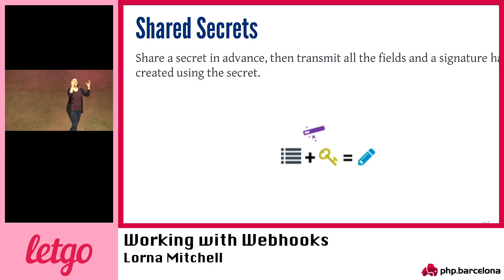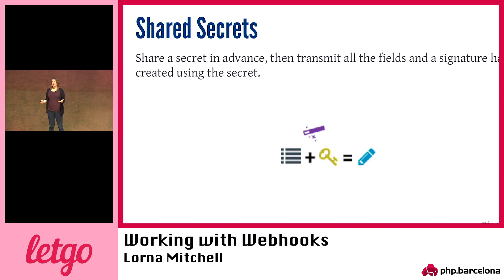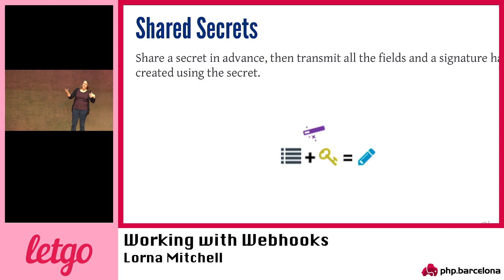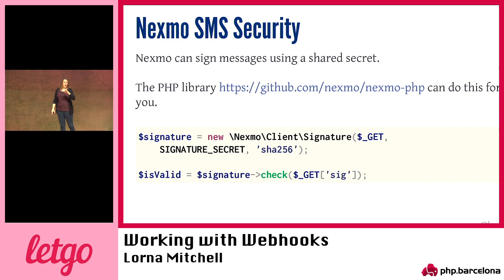We never transmit the secret — it's something you know on both sides. You receive the data and the signature, regenerate the signature on your side, and check it matches. There's also timestamp information in the data fields, so you can discard anything too old to avoid timing attacks. And if that timestamp changes, the signature will fail. You can't change anything without causing the signature to no longer work.